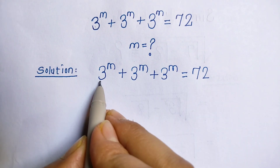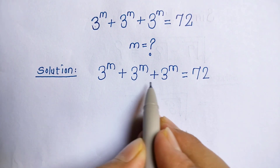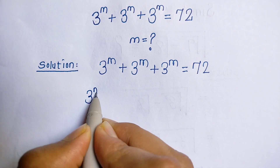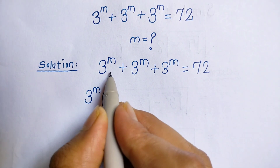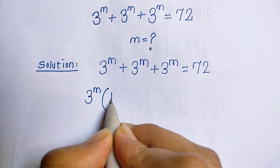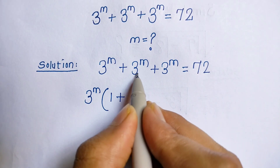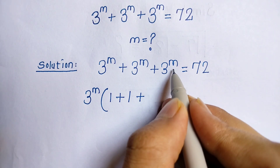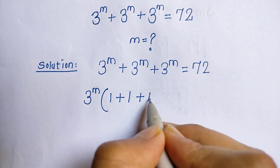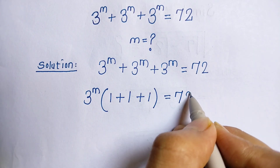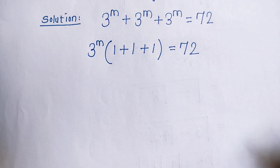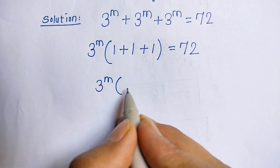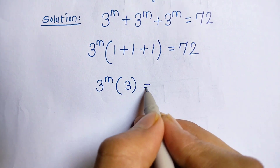Now 3 power m, 3 power m, and 3 power m are common, so we take 3 power m common. In the bracket, 3 power m divided by 3 power m is 1, plus 1, plus 1. So we get 3 power m into 3 is equal to 72.